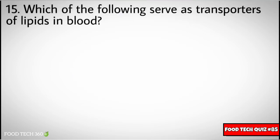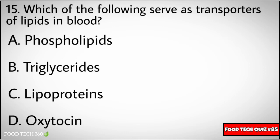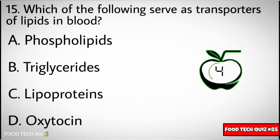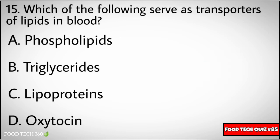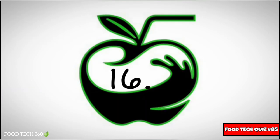Question number fifteen: which of the following serve as transporters of lipids in blood. Options: A) phospholipids, B) triglycerides, C) lipoproteins, D) oxidation. Correct answer: C) lipoproteins.